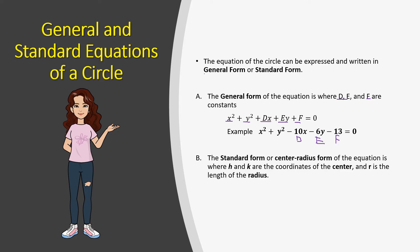The next form is the standard form, also called the center-radius form. This is where h and k are the coordinates of the center, and r is the length of the radius.